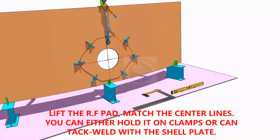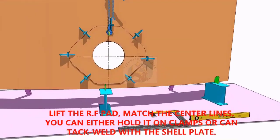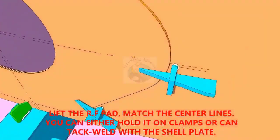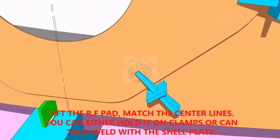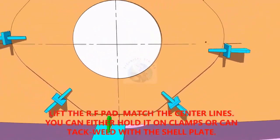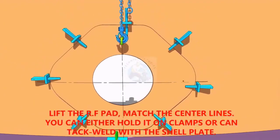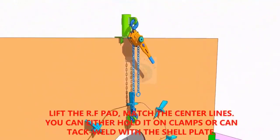TAC weld the reinforcement pad on the shell plate. You can either TAC weld directly on the shell or fix it with clamps as shown. Make sure the center lines on the shell plate and the pad are matching.